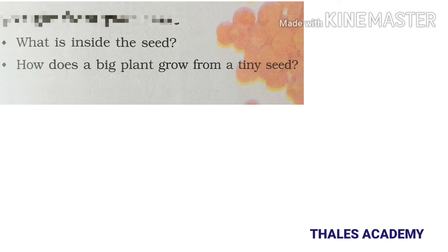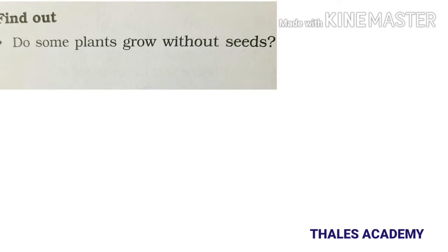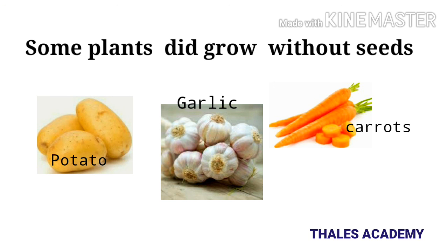How does a big plant grow from a tiny seed? If we put the seed in soil with the presence of water and air, the seed will sprout. After sprouting, it first becomes a baby plant, then a big plant, and then a tree. Do some plants grow without seeds? Yes - potato, onion, carrot, and garlic are examples of plants that grow without seeds.